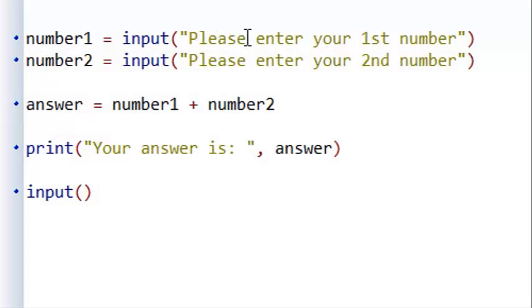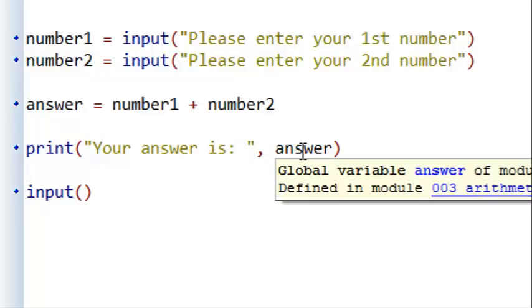In this example, you can see how we are asking the user to enter a number, store it in a variable called number1, enter another number, store it in a variable called number2, add those two values together and store the answer in a variable called answer, and then print 'your answer is' followed by the value stored in answer.